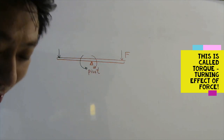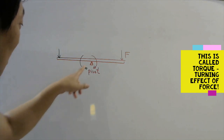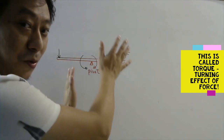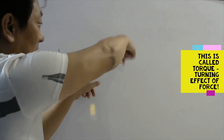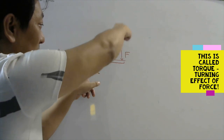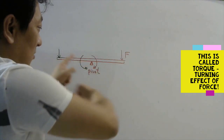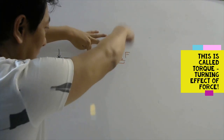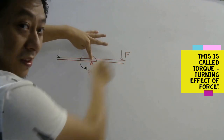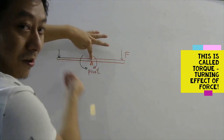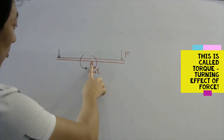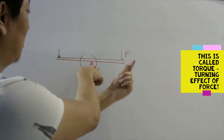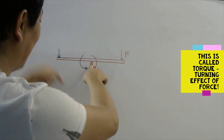How to find the direction of rotation is quite simple. About this point we want the body to rotate — if the force is acting here, the rotation will be clockwise. And if this is the point and the force is acting on the other side, it will be anti-clockwise.